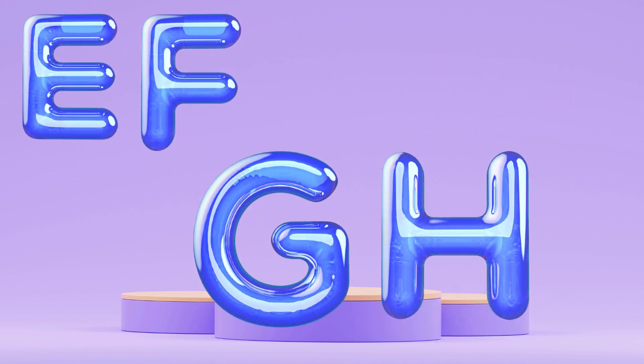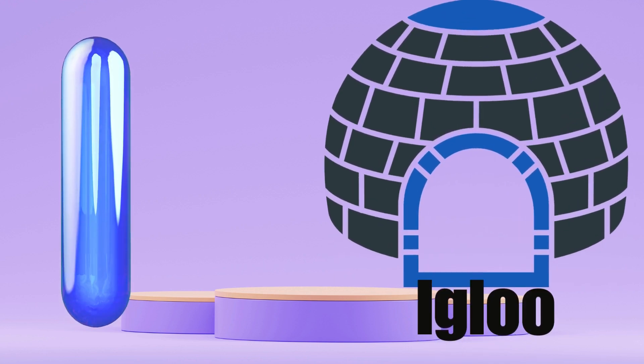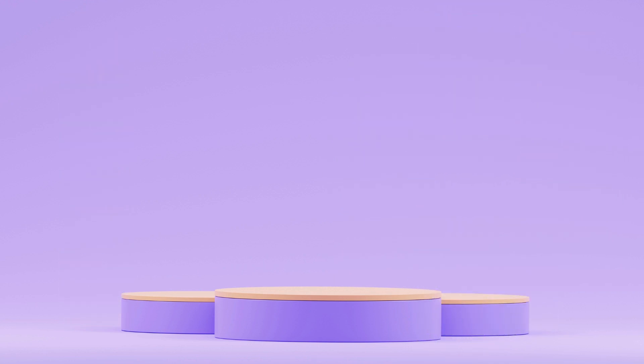I is for Igloo, I-I-Igloo. J is for Jump, J-J-Jump.